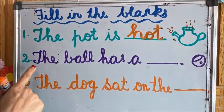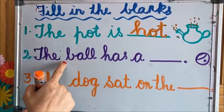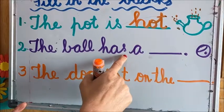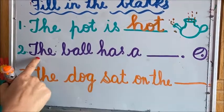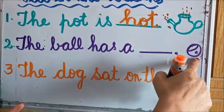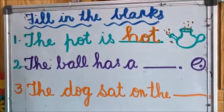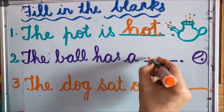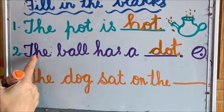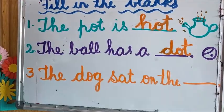The next one: the ball — B-A-L, ball. The ball H-A-S, has a dot. This ball has a dot, isn't it? So let's write: D-O-T. Read it: the ball has a dot. Correct!